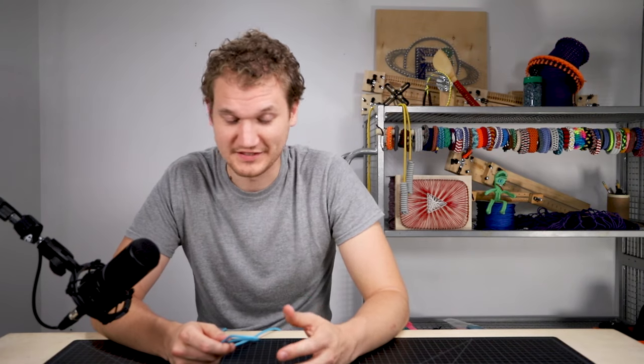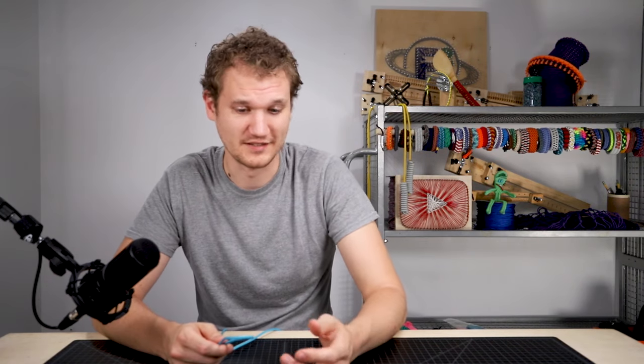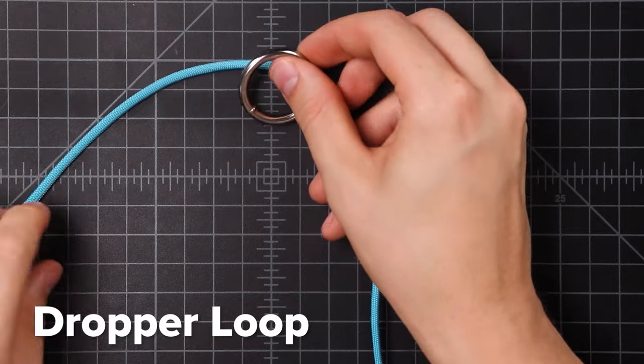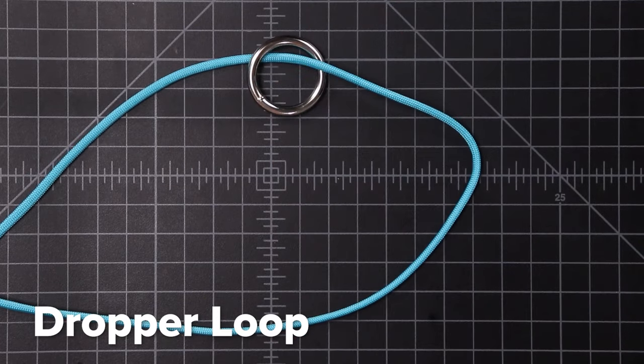Next we have the Dropper Loop Knot. This knot has been in a lot of viral videos as a quick way to tie a keychain. Begin by threading the ring onto your cord, and laying it out in a big loop.